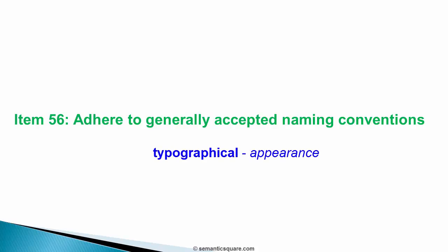Typographical recommendations are more about appearance — for example, what case to use, like upper or lower case. Grammatical recommendations are more about part of speech, like usage of verbs, nouns and adjectives.